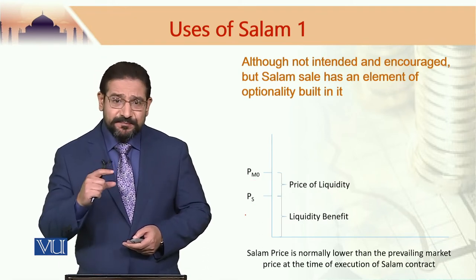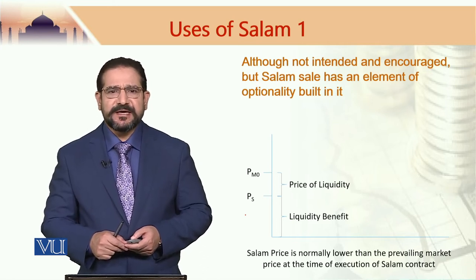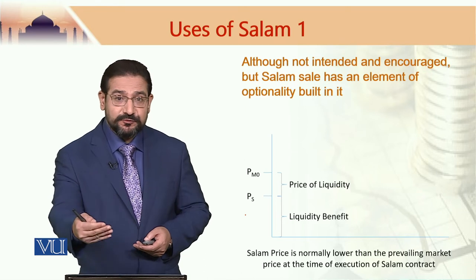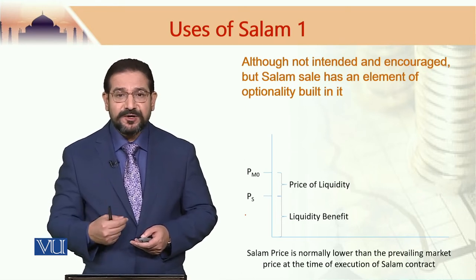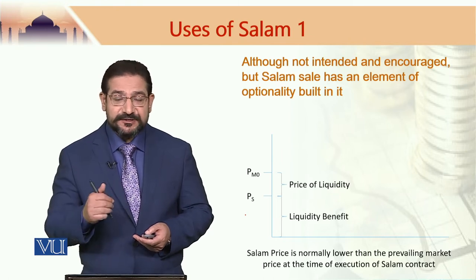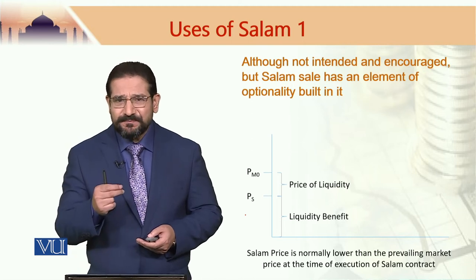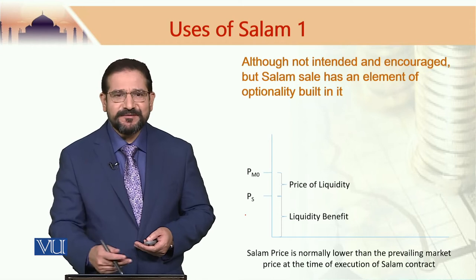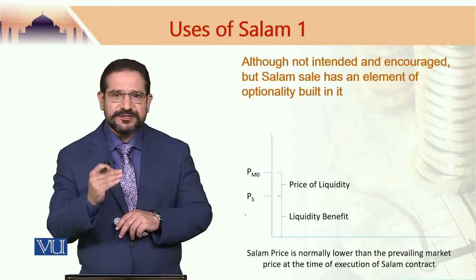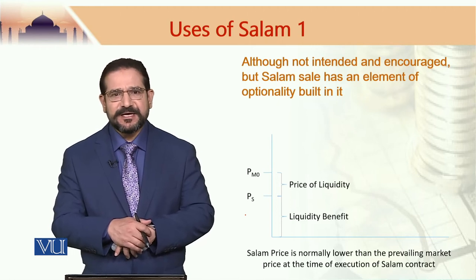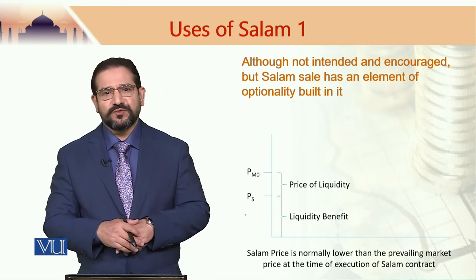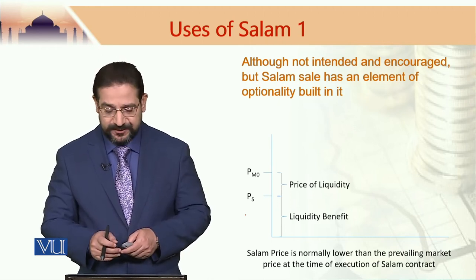The Salam price paid upfront can be seen as a liquidity benefit. The Salam seller has to deliver the commodity in the future, but receives the money — the price — now. This is a cash benefit which the Salam seller receives at the time of executing the Salam sale contract. What is the price of this liquidity? The price of liquidity is the difference between the market price and the Salam price. The Salam price is lower than the market price, so in order to receive this liquidity benefit, the Salam seller accepts a price which is less than the market price.